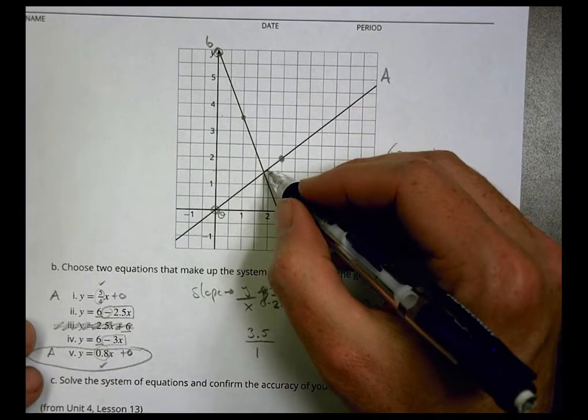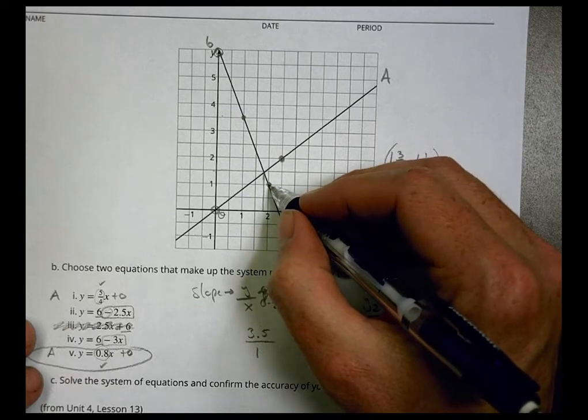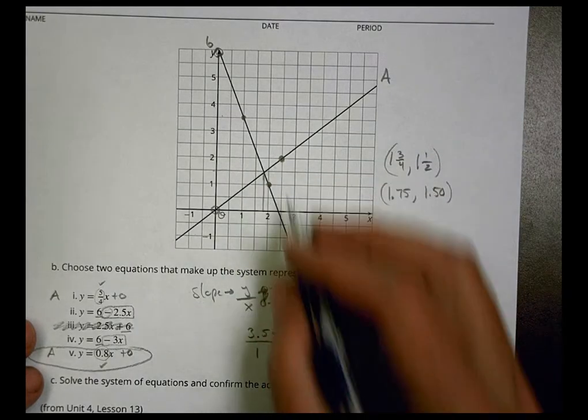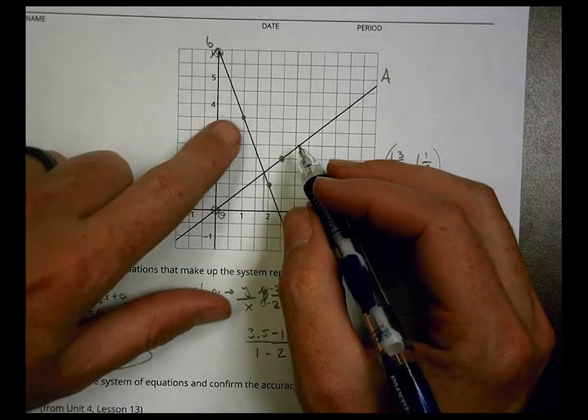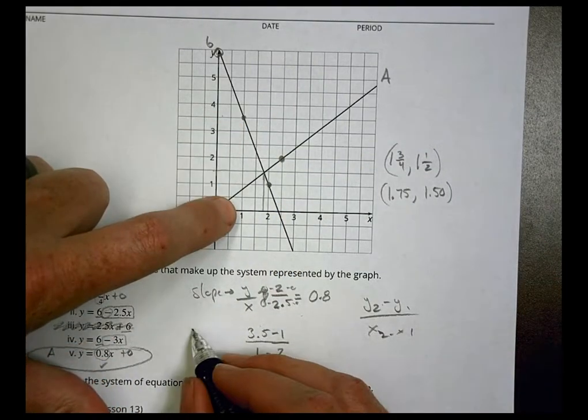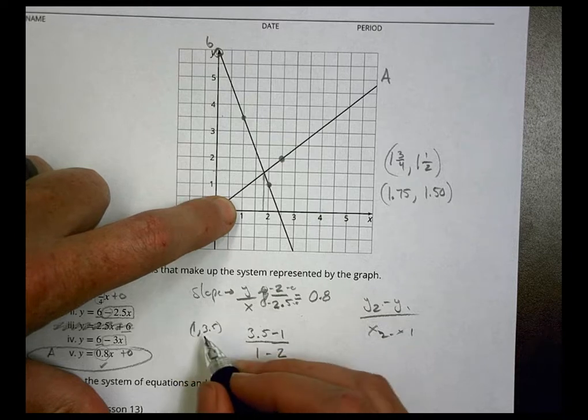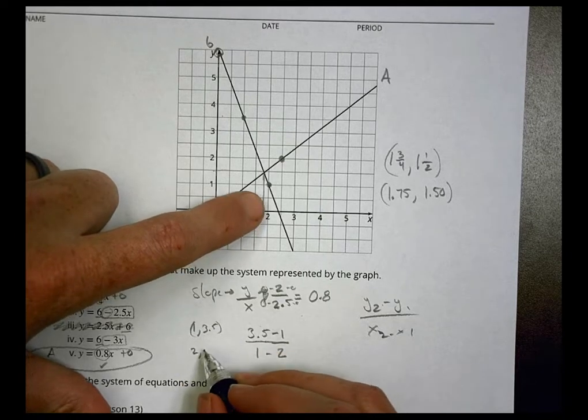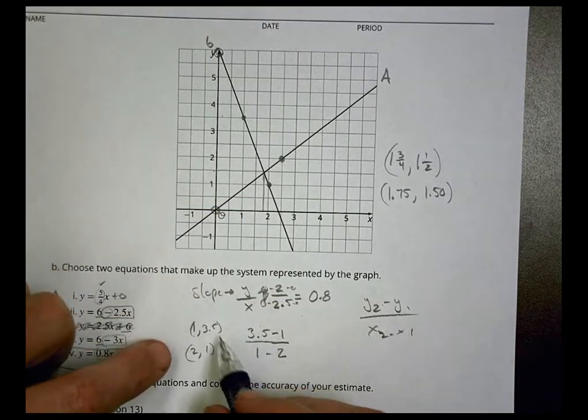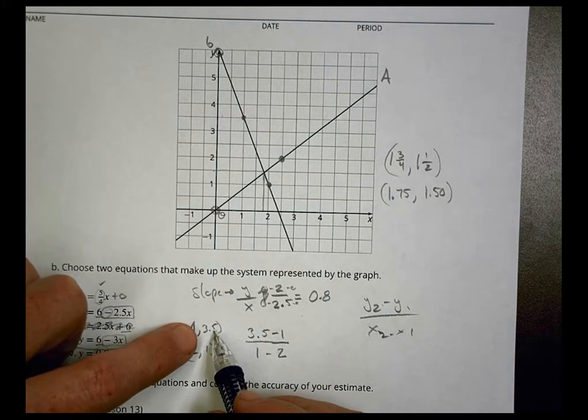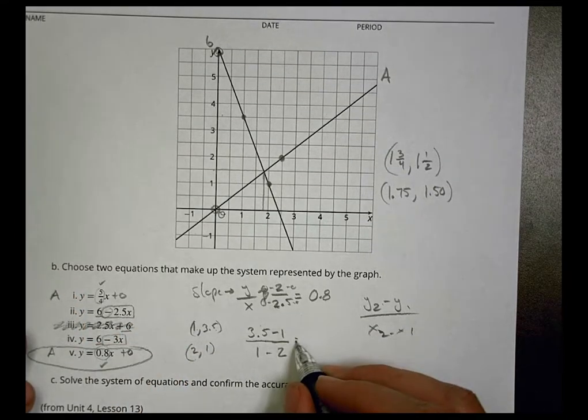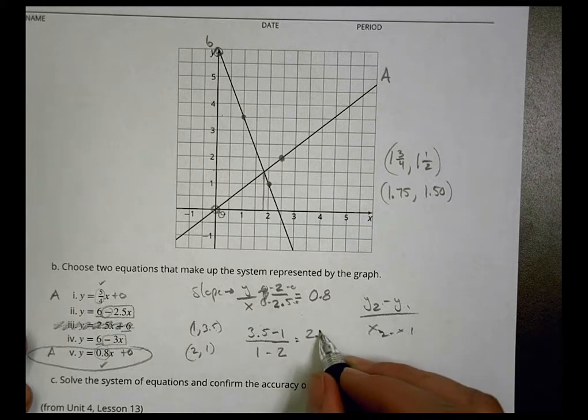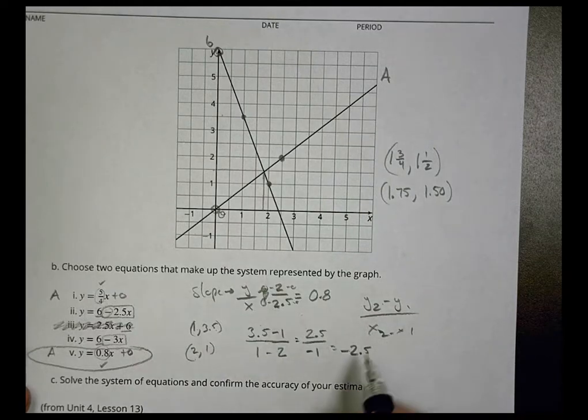So I got another point right there which is at one minus one comma, and this is at two. Okay, so I have two points here. I have the point one comma three point five, and I have the point two comma one. So I do the y2 minus y1 and then x2 minus x1. Okay, so that becomes in our case here 2.5 over negative one, which is simply negative 2.5. So that's our slope and so that's going to match this one right there. And those are our equations there.